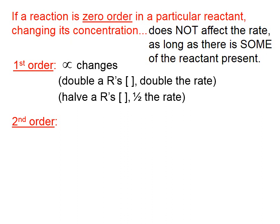if a reaction is second order in some reactant, then you have squared changes, which means when you triple that reactant's concentration, the rate will increase by triple squared, which is 9.